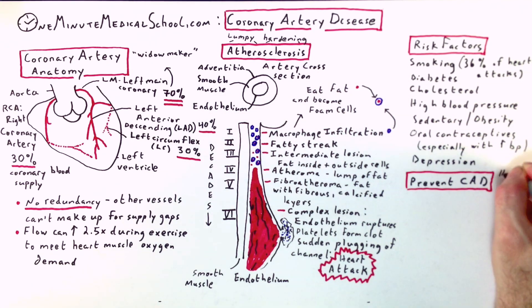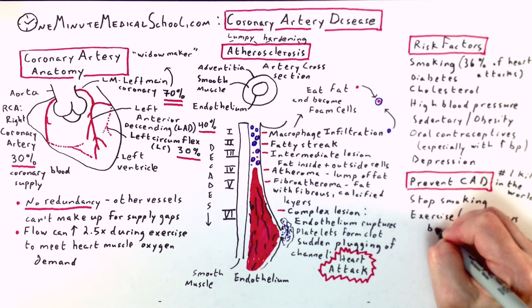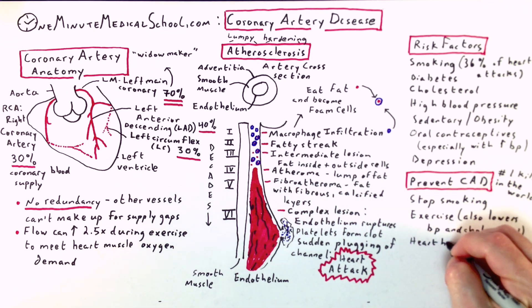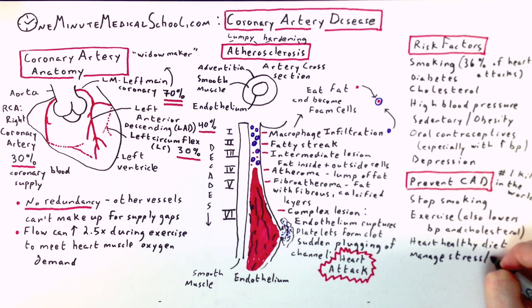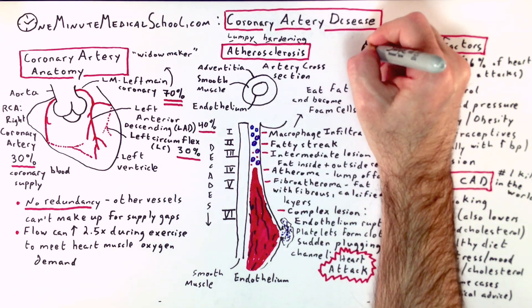To prevent coronary disease: you've got to stop smoking, exercise, eat a heart-healthy diet, manage stress and mood, manage blood pressure and cholesterol, and see your doctor about ASA.